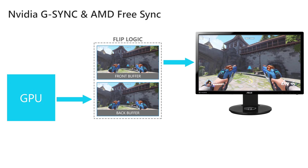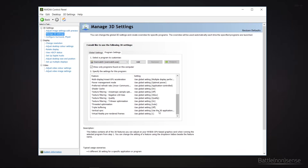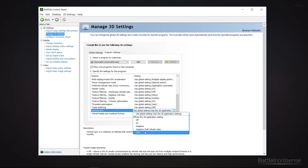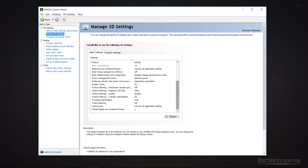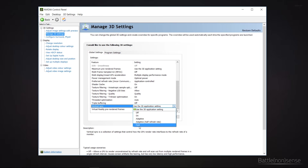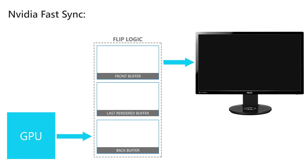So far we could choose to either live with the tearing issue, enable VSync which decreases the responsiveness of the game, or invest in G-Sync or FreeSync which is only effective when your frame rate is lower than the maximum display refresh rate. But from Nvidia we now got an additional option: it's called FastSync and you can enable it inside the Nvidia control panel for specific applications or set it as default for all applications. Just like VSync, FastSync is only effective when your frame rate is higher than the refresh rate of your monitor. But unlike VSync, FastSync does not limit your frame rate — and it achieves that by adding an additional buffer.